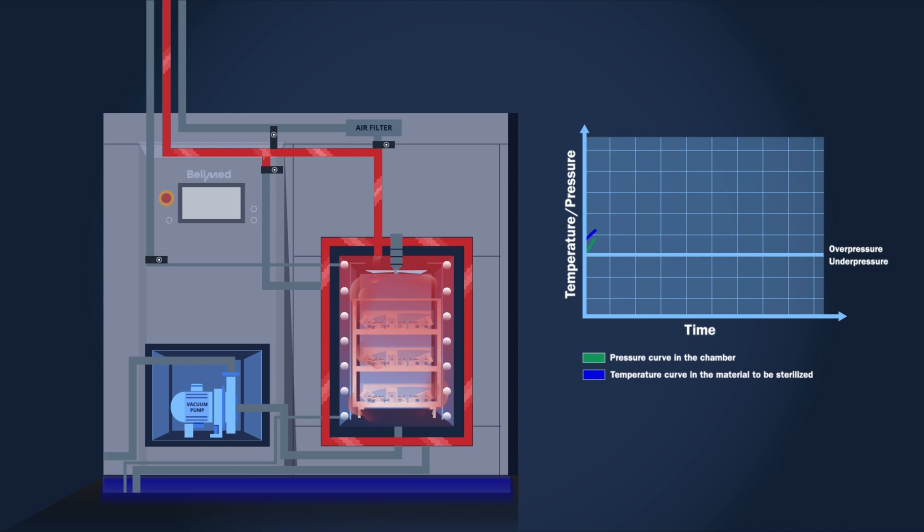Then hot steam is released into the chamber so pressure and temperature rise. As air, which is still in the chamber, is a really good insulator, we need to avoid air blocking steam from getting in touch with the product to be sterilized.